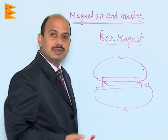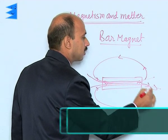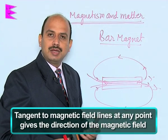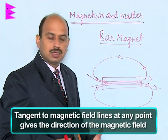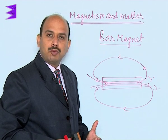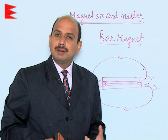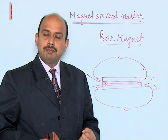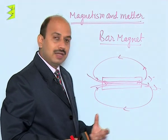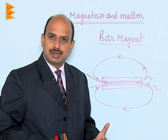The field lines originate from the north and merge at the south. The tangent to these magnetic field lines at any point gives the direction of the net magnetic field at that point. Two magnetic field lines of the bar magnet do not intersect — if they intersect at a point, it means there would be two directions of the magnetic field at that point, and a magnetic compass placed there would point in two directions, which is not possible.